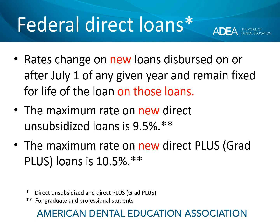Note that the maximum rate on new direct unsubsidized loans is 9.5%, and the maximum rate on new direct plus loans is 10.5%. The interest rate on direct plus loans is always a full point higher than on direct unsubsidized loans. Your takeaway here is that the rate changes on new loans every July 1.